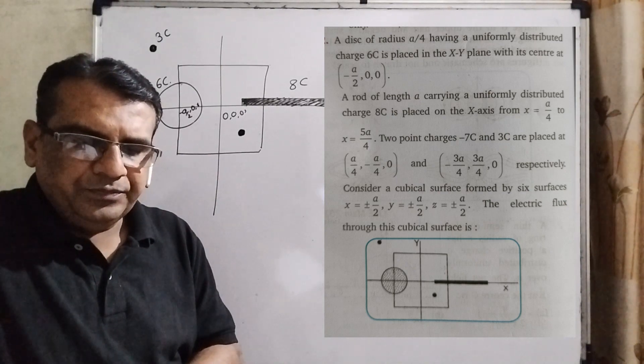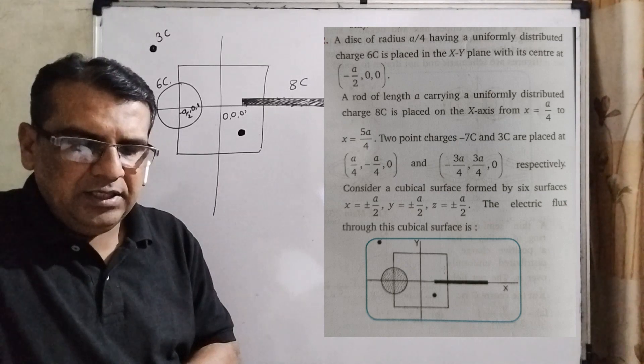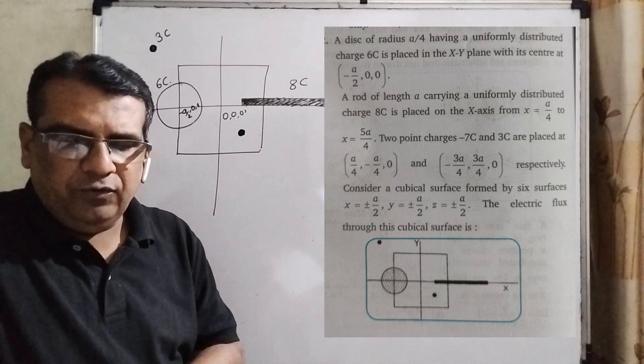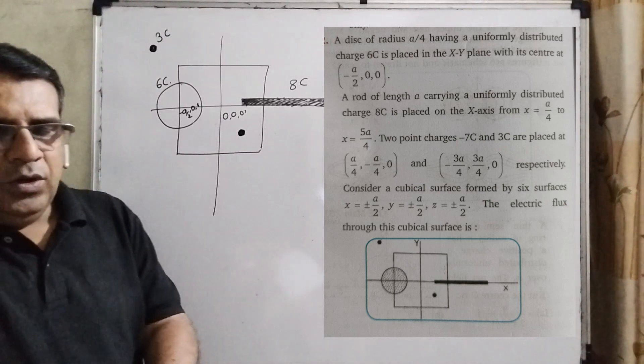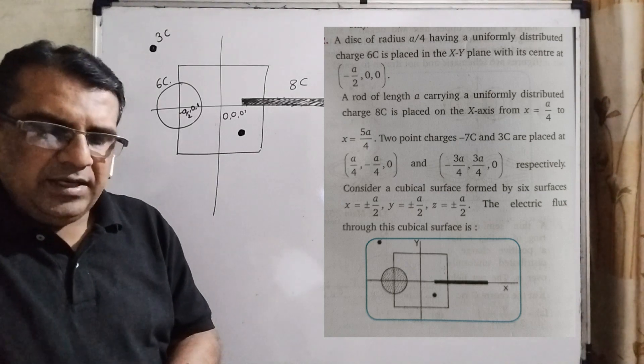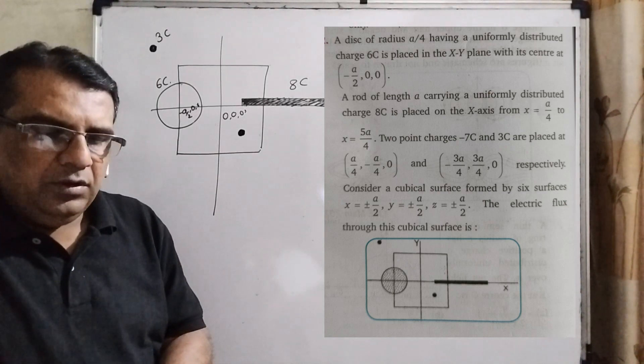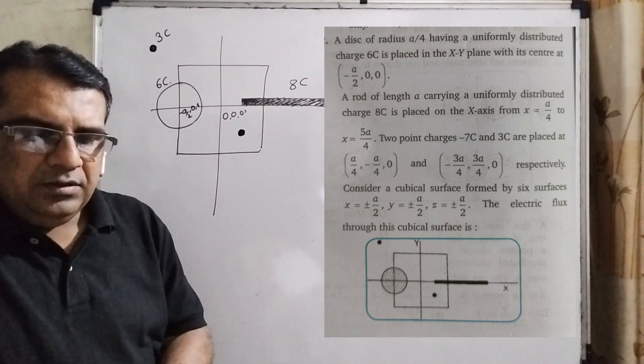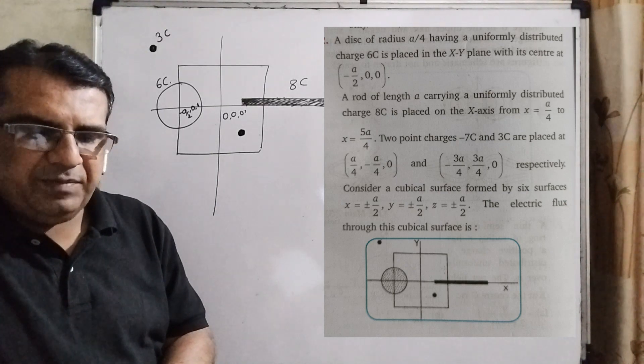A rod of length a carrying a uniformly distributed charge 8C is placed on the x-axis from x = a/4 to x = 5a/4. Two point charges -7C and 3C are placed at (a/4, -a/4, 0) and (-3a/4, 3a/4, 0) respectively.